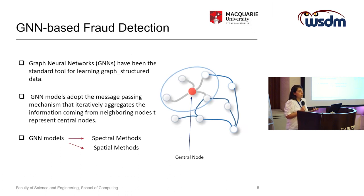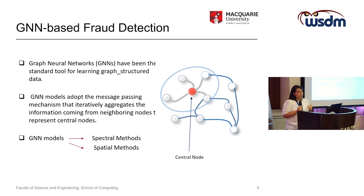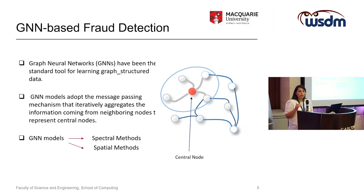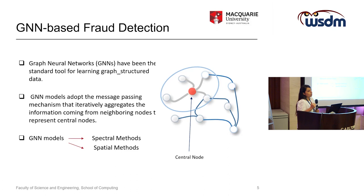GNN models act based on message-passing mechanisms. In the message-passing mechanism, in order to produce a representation for a central node — such as a red node — they aggregate information from their neighbors. We can conclude that one of the most important parts of GNN models is the aggregation process, and the performance of GNN models heavily relies on this part.